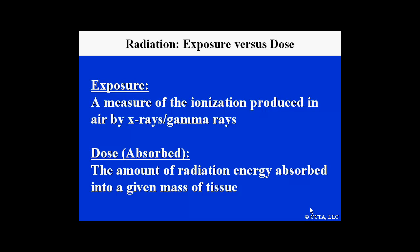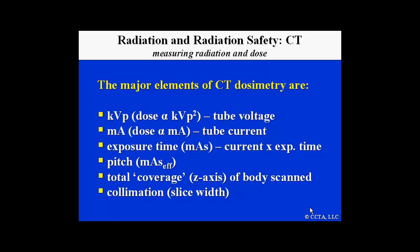Dose, or absorbed dose, is the amount of radiation energy absorbed into a given mass of tissue. The major elements of CT dosimetry include tube voltage, or kilovolts. Importantly, radiation dose is related to kilovolt squared, so this is a very important parameter in terms of either increasing or reducing radiation dose.